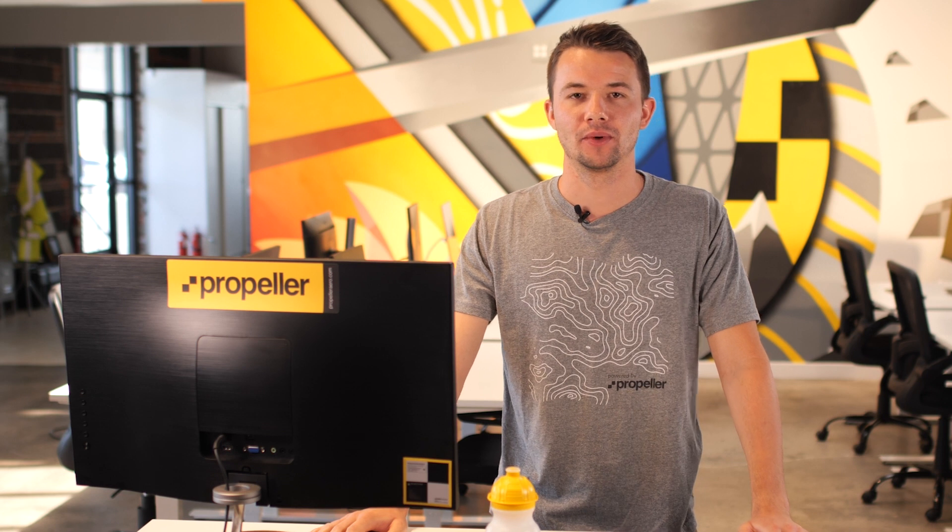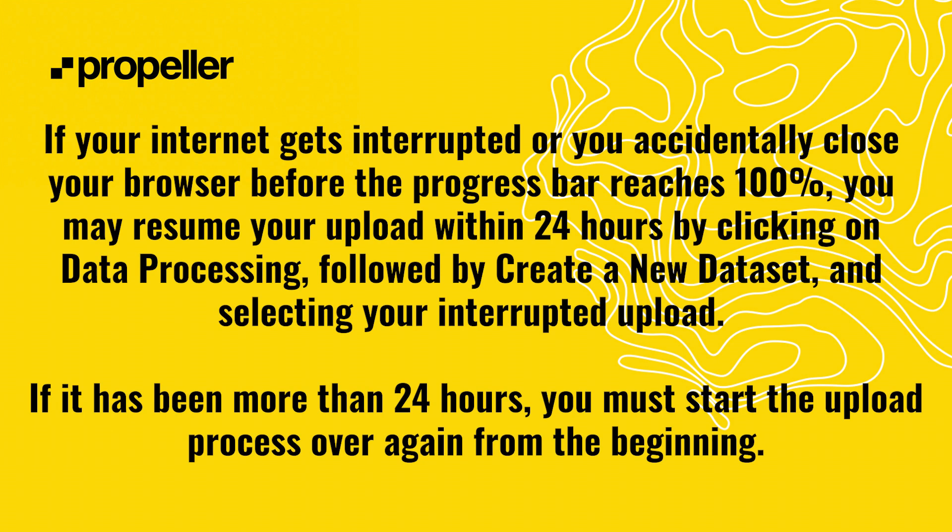For strict surveys, you would like our data processing team to take the time to investigate any errors or inconsistencies that might exist. An example of when you might select strict would be for a survey where you're making comparison measurements to a design file or other sensitive measurements. Once you've chosen your QA settings, click Submit. In step 6, all of your files are uploaded to our servers. Make sure to allow the upload progress bar to reach 100% before closing the tab on your browser.